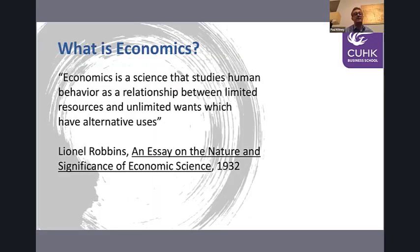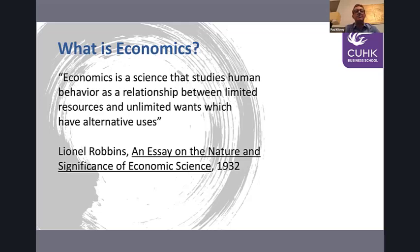Lionel Robbins probably had the best definition in the 1930s, which says economics is a science that studies human behavior as a relationship between limited resources and unlimited wants which have alternative uses. What this means is that economics is about allocating resources as efficiently as possible and making decisions that allocate resources as efficiently as possible.